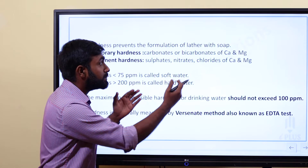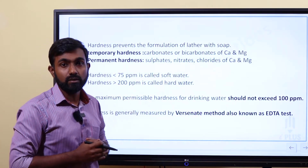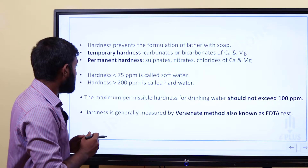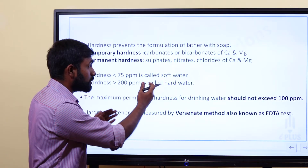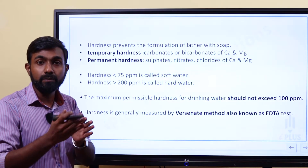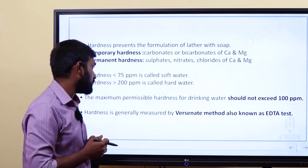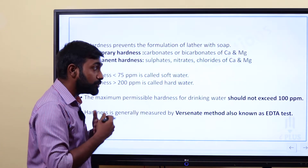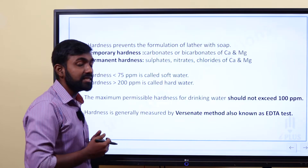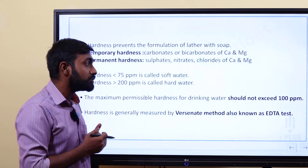Permanent hardness is caused by sulfates, nitrates, and chlorides of calcium and magnesium. Hardness less than 75 ppm is soft water; hardness greater than 200 ppm is hard water. The maximum permissible hardness of drinking water should not exceed 100 ppm. Hardness is generally measured by the versinate method, also known as the EDTA test.